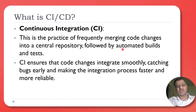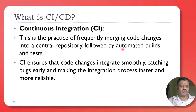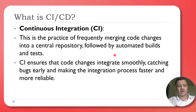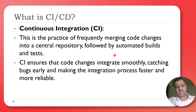There are two major terms: continuous integration and continuous deployment. Let's understand these two terms quickly before moving ahead. Continuous integration is the practice of frequently merging code changes into a central repository, followed by automated builds and tests. In GitHub, you work on child branches and frequently merge these child branches with the central repository.